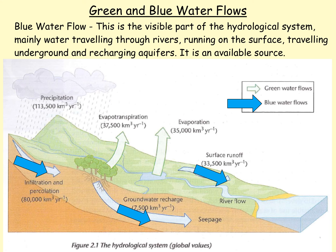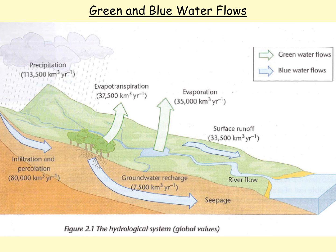So just to recap, green water and blue water flows are very important in the hydrological cycle. We obviously use the blue water flows for our own purposes. It is worth noting some of the volumes of water that are actually transferred through our systems — it is a massive amount of water, and we often forget quite how much water we have on Earth, and how little is actually available to us. We're going to look at that in a separate video.